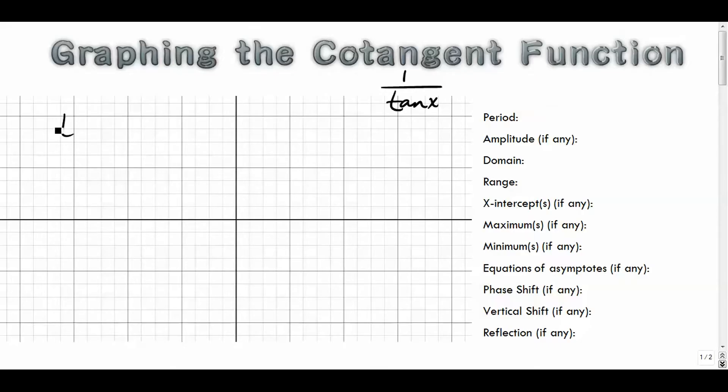So first and foremost, what is the cotangent? Well, it's defined as the reciprocal of tangent. So whatever tangent gives you, just flip that over, one over that. For example, the tangent of zero is zero, which means that the cotangent of zero is one over that, which is undefined.